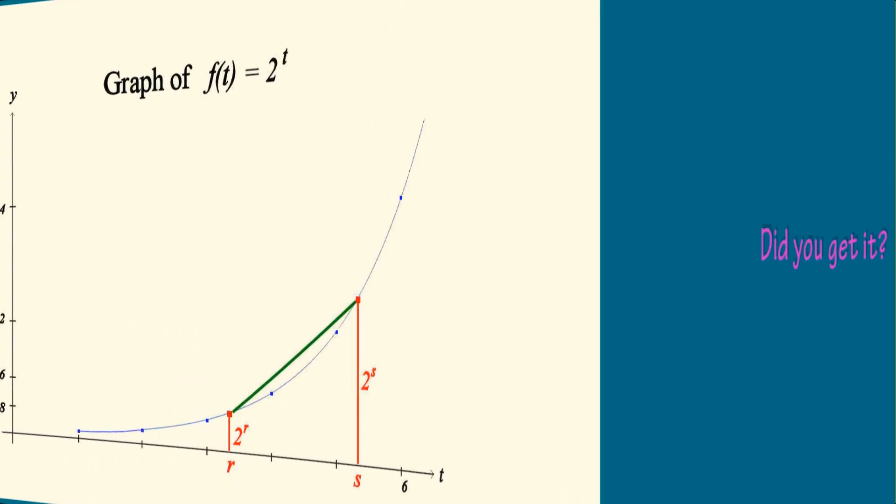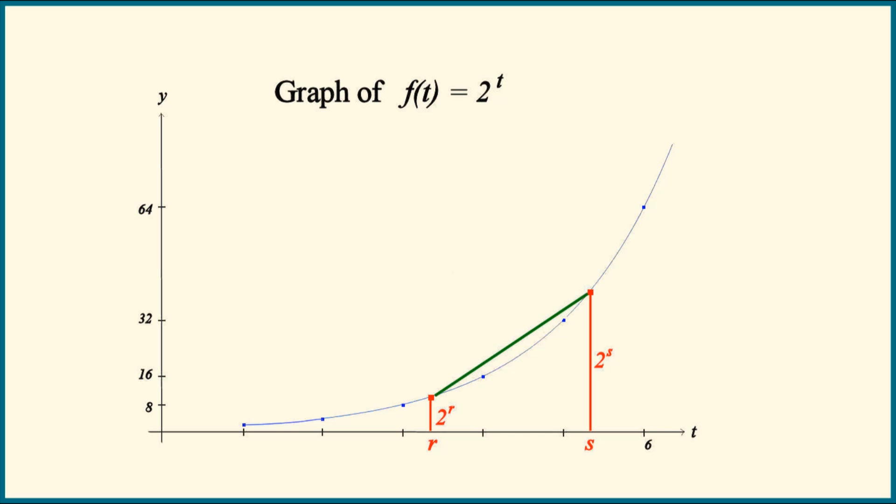Okay, let's see what happens on an arbitrary interval, rs. This time we have f of r is 2 to the r, f of s is 2 to the s. The ratio, f of s over f of r is 2 to the s over 2 to the r, which equals 2 to the s minus r. To obtain the result 2, we'll have to raise the ratio to the power 1 over s minus r.